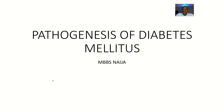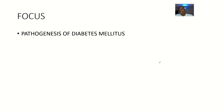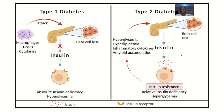We'll quickly talk about the pathogenesis of diabetes mellitus. For the pathogenesis of this disease, you are trying to look at the types. The most popular types are diabetes mellitus type 1 and diabetes mellitus type 2. Although there's pre-diabetes, but when discussing something serious, it is usually left out.